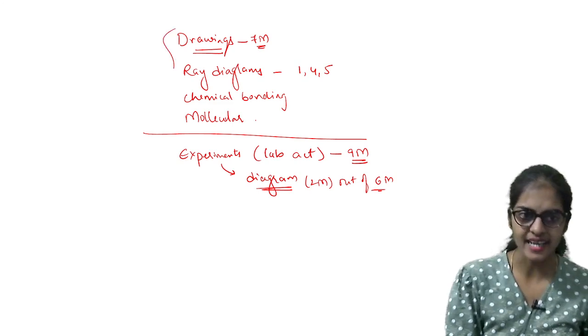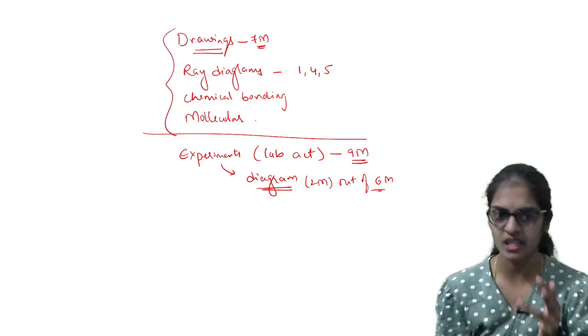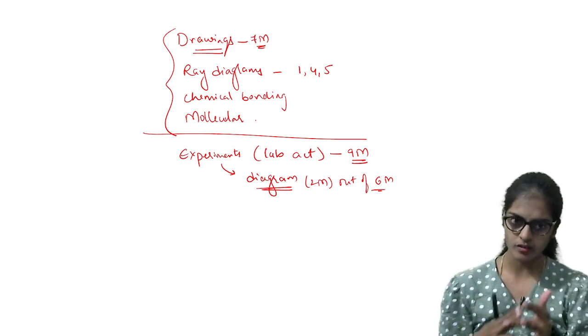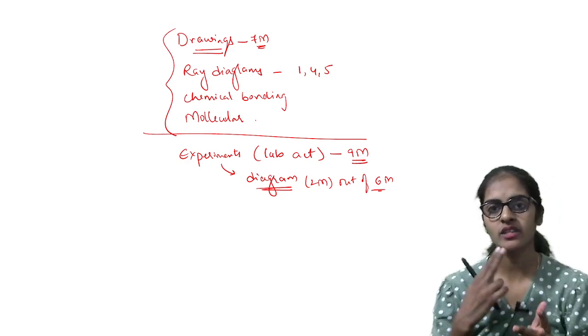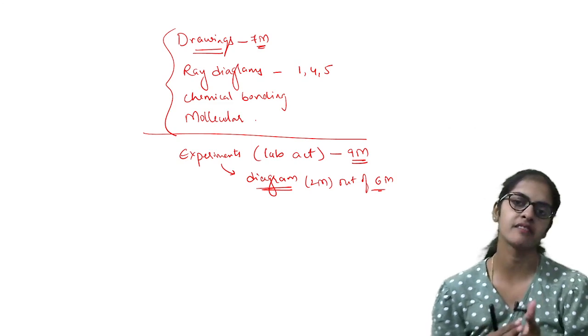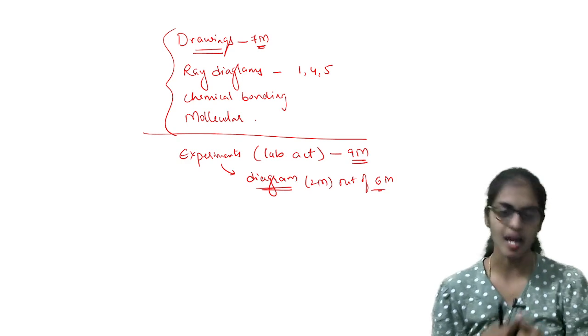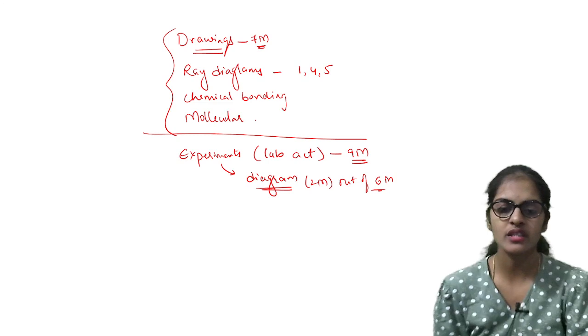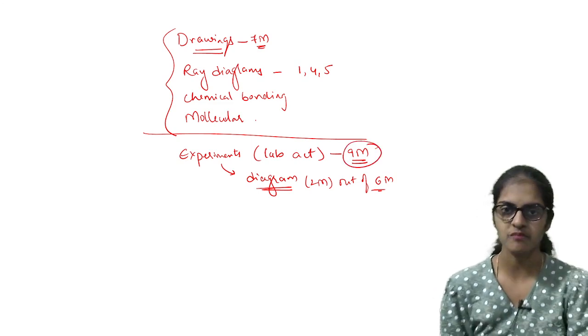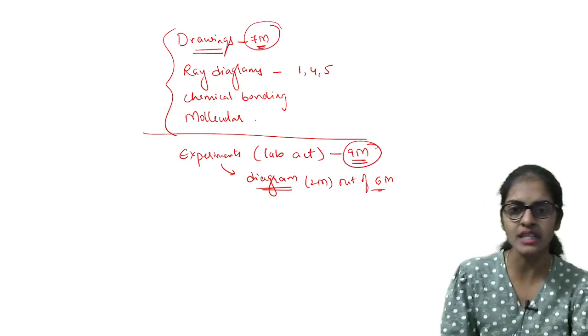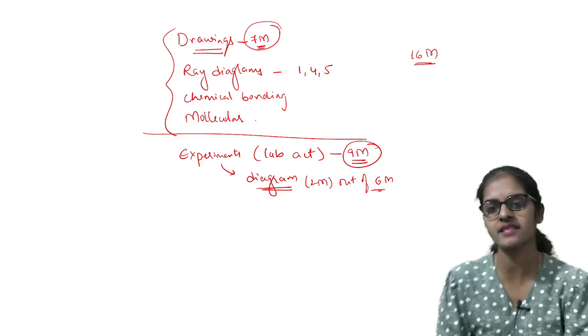So all these diagrams - diagrams relating to ray diagrams, molecular structures and all, and also the diagrams related to the experiments, all the lab activities you will learn. So diagram part is done. Then also learn the lab activities. So very few lab activities you have. So this lab activities will give you nine marks, and here you have seven, so total 16 marks. Pass mark here itself you are getting.